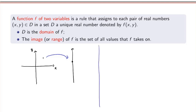An example would be the function f(x, y) given by the square root of 1 minus x squared minus y squared. This takes as input two numbers x and y, and outputs a single number, which is the square root of 1 minus x squared minus y squared.